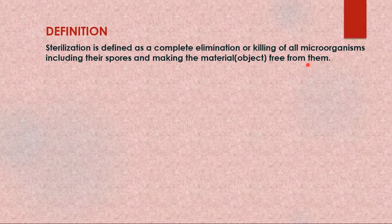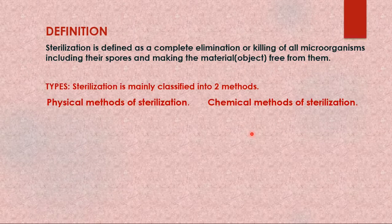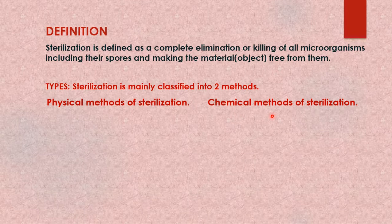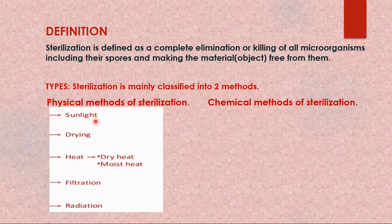Sterilization can be done by two methods. One is physical methods of sterilization and the second is chemical methods of sterilization. Physical methods are achieved by usage of sunlight, drying, heat, filtration, and radiation.